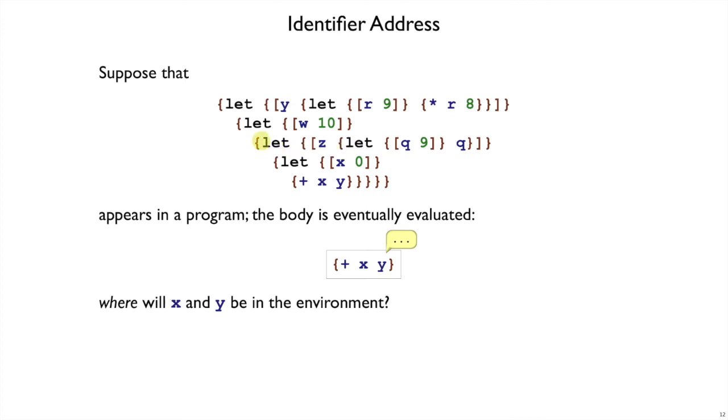That's because there's some environment when we get to this let. That environment is used for the right-hand side, where q is added. But once we look up q and return, the value that we bind for z is added to the environment of the let. That is, the one that just has w and y. So when we're trying to figure out where y is, we know it's going to be the fourth thing, no matter what these right-hand side expressions look like. All that matters are the enclosing bindings for this reference to y.